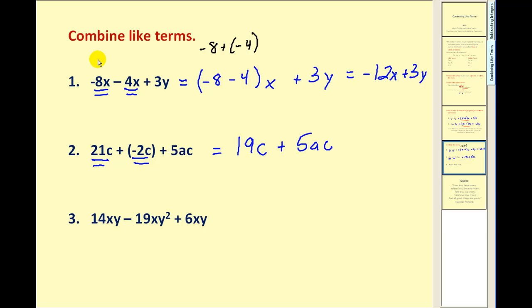On the last problem, we identify fourteen xy and six xy as like terms. So we can combine those again by adding the coefficients. Fourteen plus six would give us twenty xy. And then this term cannot be combined with the other terms. So we leave it as nineteen xy squared.